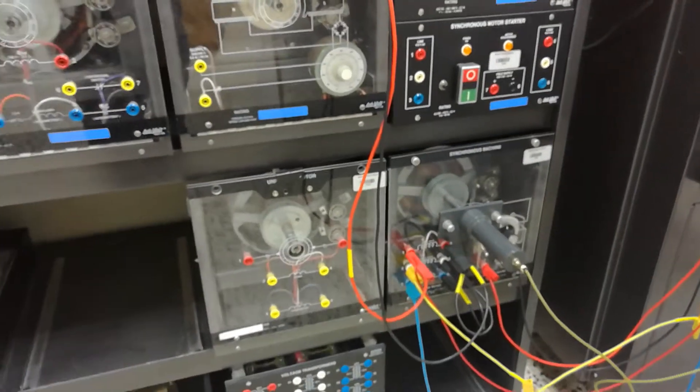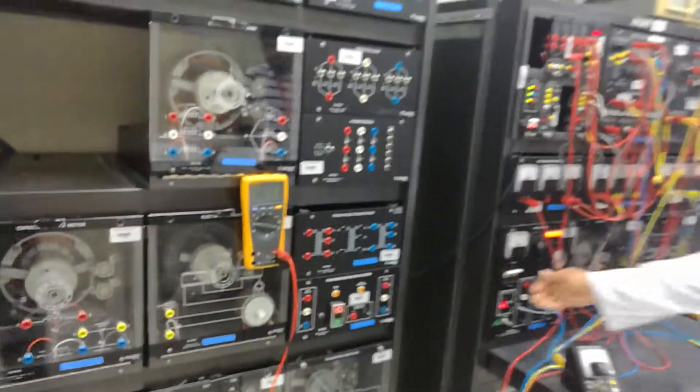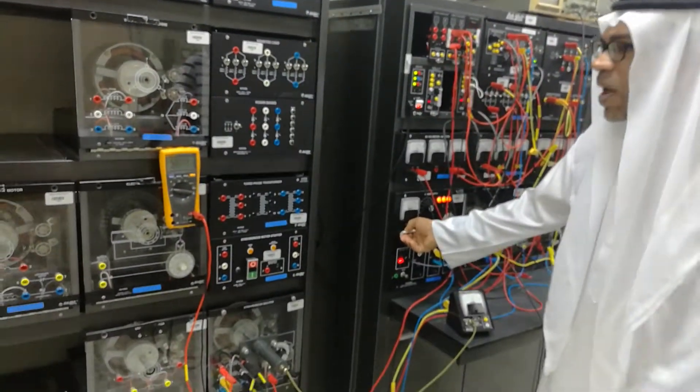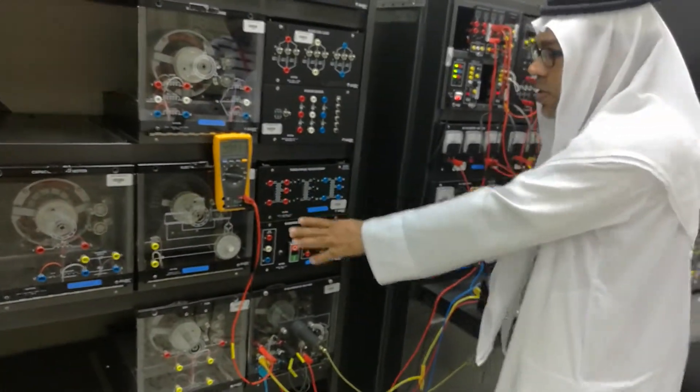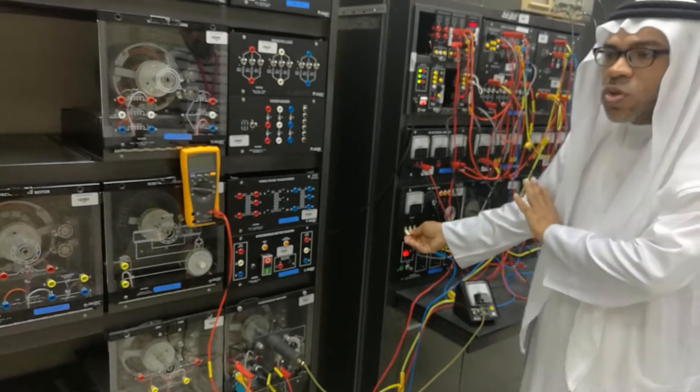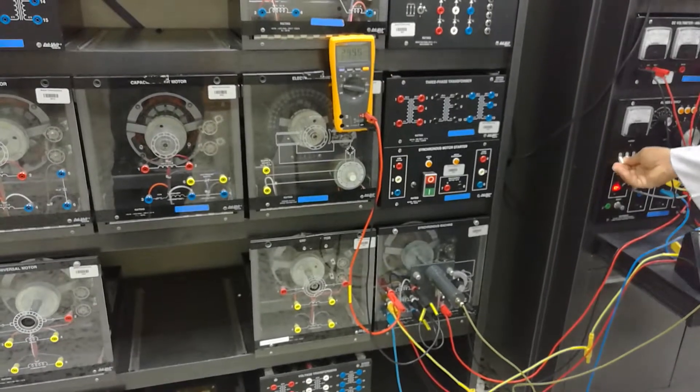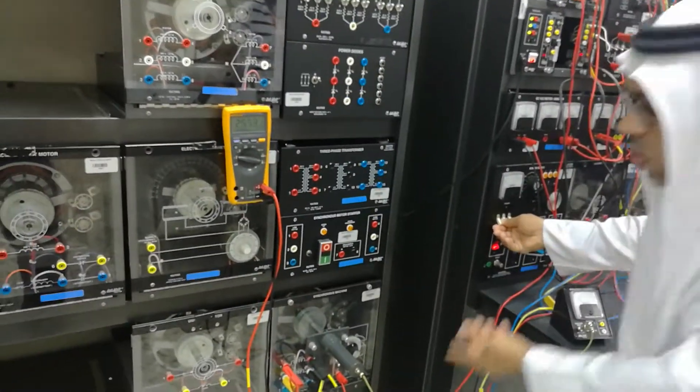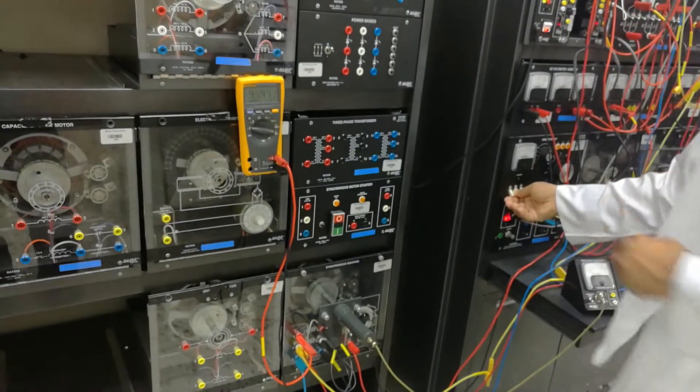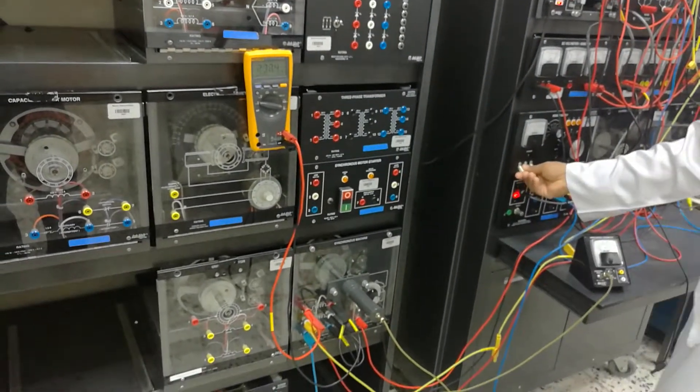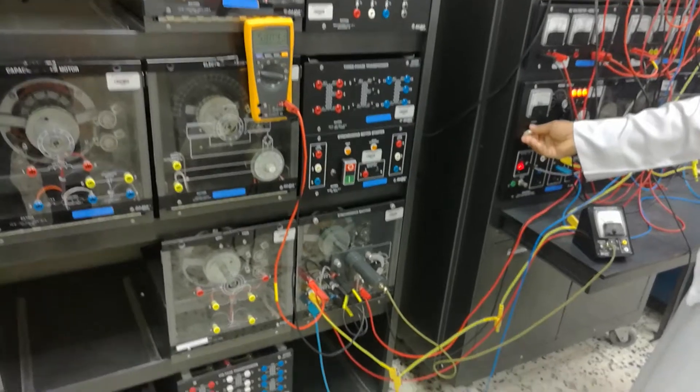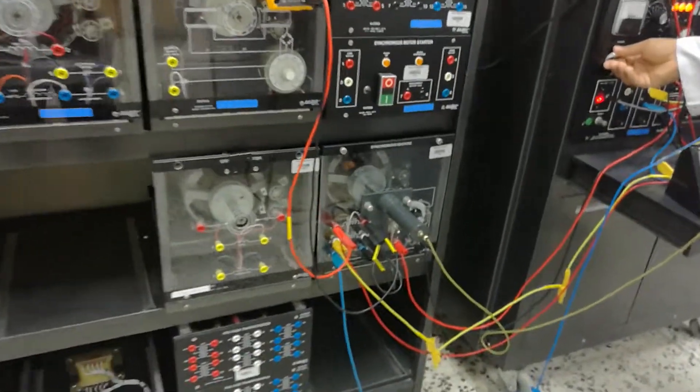Now the motor is running as a synchronous motor perfectly. Suppose I turn on the power supply and keep the frequency at 50 hertz. As we guess, the motor will not be able to run again. Why? Because the motor driving frequency is 50 hertz and the rotor is not able to catch up with the rotating field. Let's try. There is a problem.